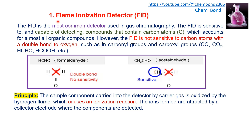The first detector is the flame ionization detector (FID). FID is the most commonly used detector in GC. It is sensitive to and capable of detecting compounds that contain carbon atoms, which accounts for almost all organic compounds. So FID can be used for all organic compounds, but there are some exceptions — it is not sensitive to carbon atoms with a double bond to oxygen, such as carbonyl carbon and carboxyl groups.